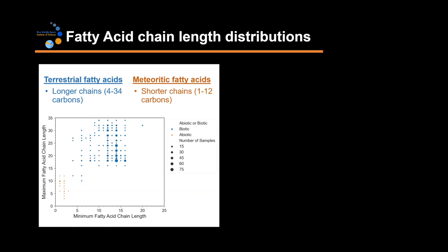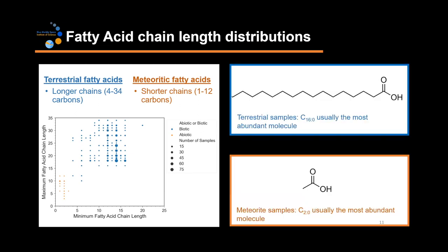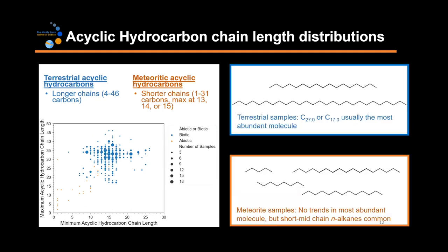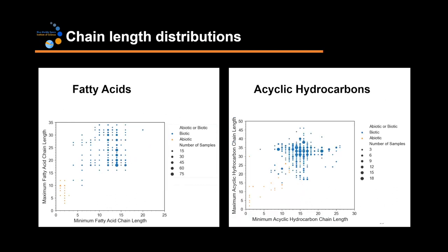Starting with chain length distributions, this graph shows the minimum or shortest fatty acid detected in each sample on the x-axis and the longest or maximum fatty acid chain length for each of those same samples on the y-axis. Blue dots are terrestrial biotic, orange is meteoritic abiotic, and the size of the dot corresponds to the number of samples. You can see life prefers longer chains. Additionally, terrestrial samples usually show that C16 is the most abundant molecule, but for meteorites, C2 is usually the most abundant. We did the same thing for acyclic hydrocarbons — again min and max chain length on the x and y axes — and you can see there's again a separation between life and not life, with a little bit of crossover for this class of lipids. For the most abundant acyclic hydrocarbon, either C17 or C27 is the most abundant for terrestrial samples, and there are no clear trends for meteorites, but short or mid chain N-alkanes are pretty common.